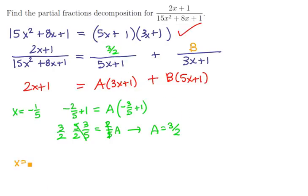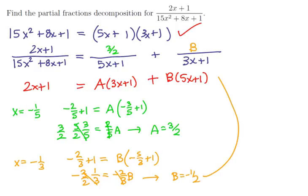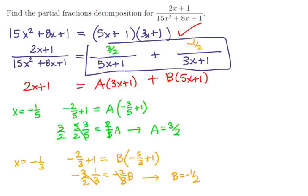Similarly, setting x=-1/3 makes the A term cancel. We get -2/3+1 = B(-5/3+1), which gives 1/3 = -2/3·B, so B = -1/2. Plugging these into our decomposition gives the exact same result we had before. That's our solution.